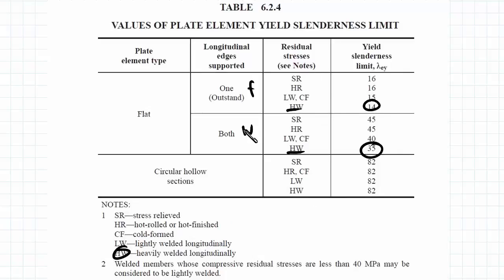And this time we're going to be looking at the web, which is where we have both edges supported for longitudinal. And it's hot welded because it's a welded beam. And our yield slenderness limit is now 35.